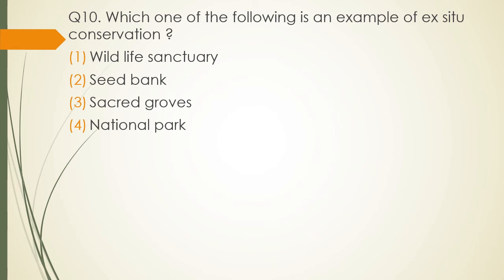Question 10. Which one of the following is an example of ex-situ conservation? Options: wildlife sanctuaries, seed banks, sacred groves, or national parks? Ex-situ conservation means outside the natural environment. Seed banks conserve plants outside their natural environment. So the ex-situ example is option 2 — seed banks.